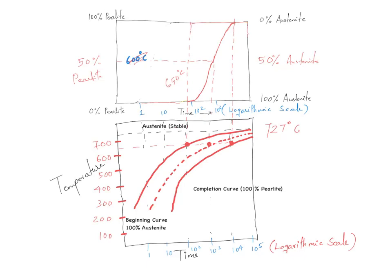I hope the idea of TTT diagrams is now clear. Next, we will talk about the formation of each microstructure using this diagram — how time-temperature dependence influences the formation of each microstructure and in turn the mechanical properties of the alloy.